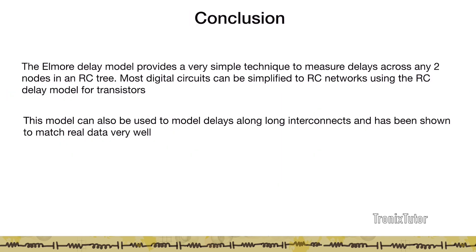The Elmore delay model provides a very simple technique to measure delay between any two nodes and works for RC trees. Most digital circuits and gate cascades can be simplified into RC trees, making this highly applicable. Additionally, this model can be used for delays in very long interconnects and correlates very well with measured data, so the Elmore delay model is used even for long data paths over long interconnects.